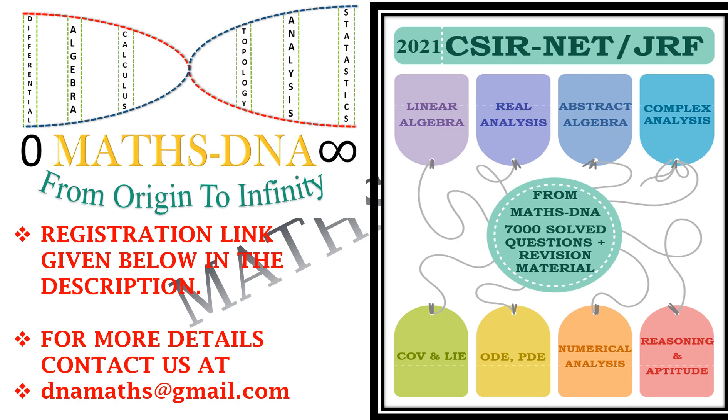If you are preparing for CSIR NET JRF 2021 Mathematics, then here is good news for you. We are providing 7000 solved questions that includes previous year questions as well and revision material for each and every topic. You can register at the link given below in the description or contact us directly at dnamaths@gmail.com.